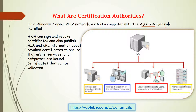You have one computer, you install the Active Directory Certificate Services role on it, and this computer will be called your Active Directory Certificate Authority. A CA can sign and revoke certificates and also publish AIA and CRL information about revoked certificates.